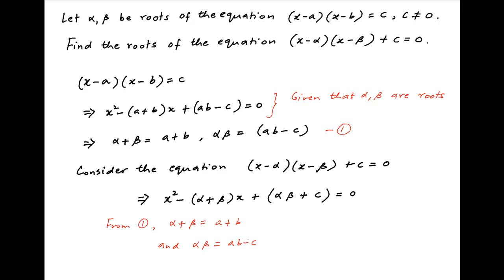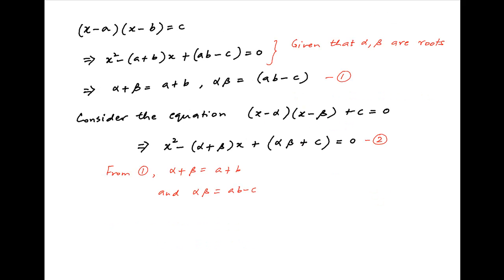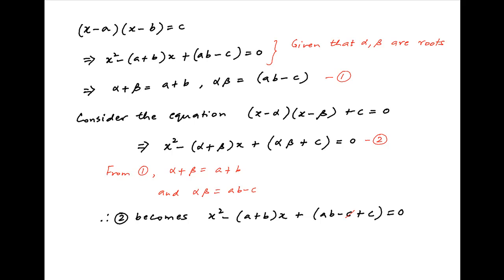Therefore this quadratic equation can be written as x² − (a + b)x + (ab − c) + c = 0. This simplifies to x² − (a + b)x + ab = 0.